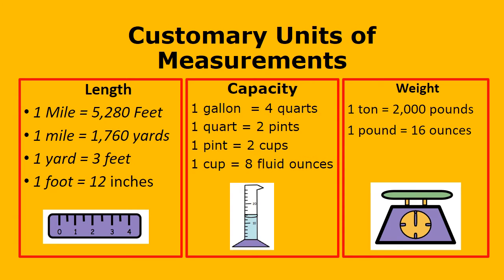In capacity we have 8 fluid ounces is 1 cup, 2 cups is 1 pint, 2 pints is 1 quart, 4 quarts is 1 gallon. And in weight we have 16 ounces is 1 pound, and 2,000 pounds is 1 ton.